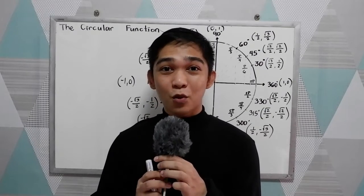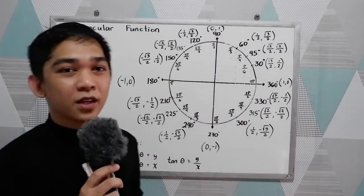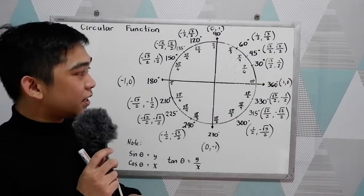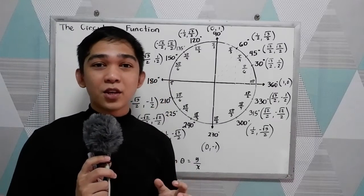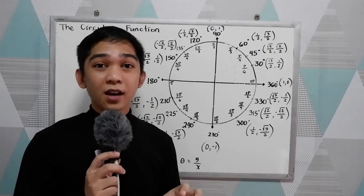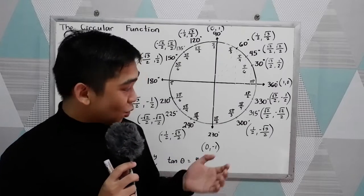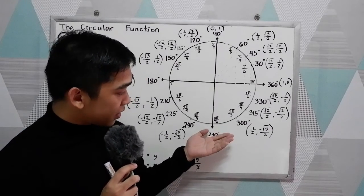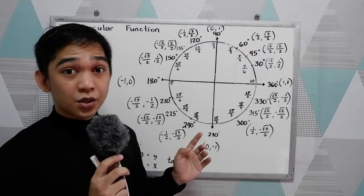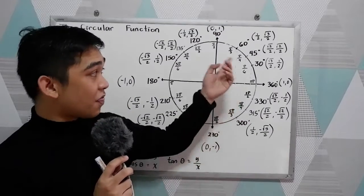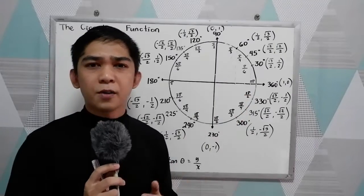Good day everyone! Today I will be discussing the circular function. The circular function is the combination of our unit circle and the special angles. That's why we have here the unit circle. When we say unit circle, it is a circle centered at the origin with radius equal to 1.